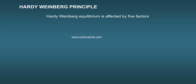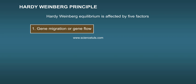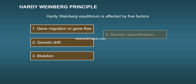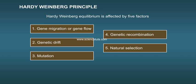Hardy-Weinberg equilibrium is affected by five factors: 1. Gene migration or gene flow. 2. Genetic drift. 3. Mutation. 4. Genetic recombination. 5. Natural selection.